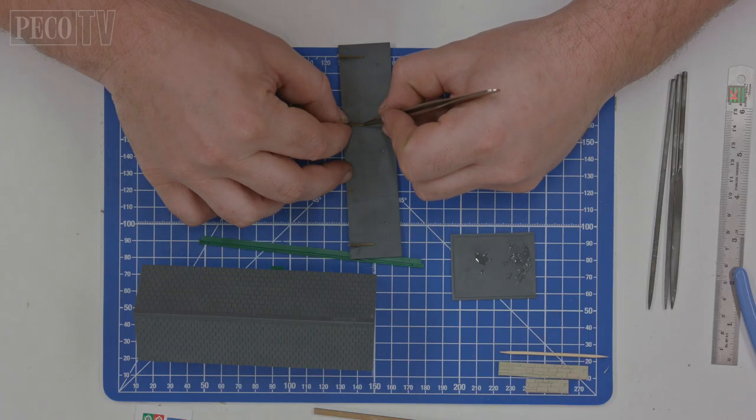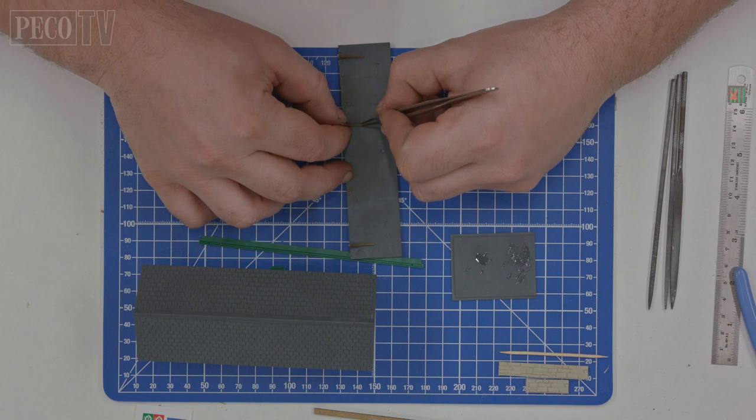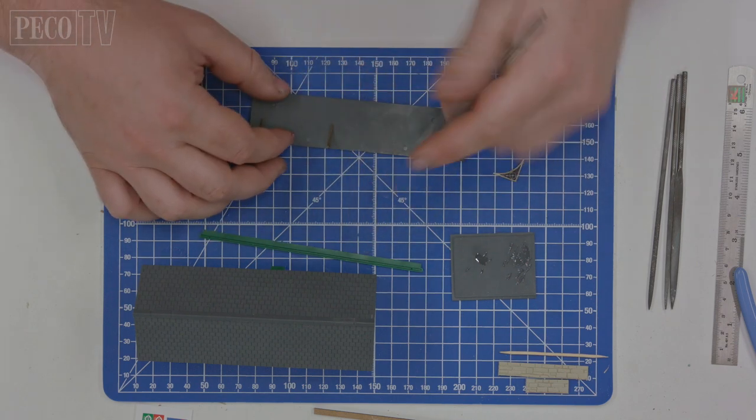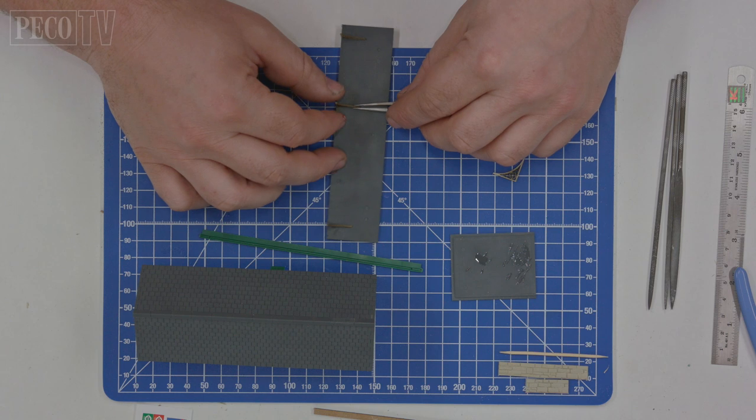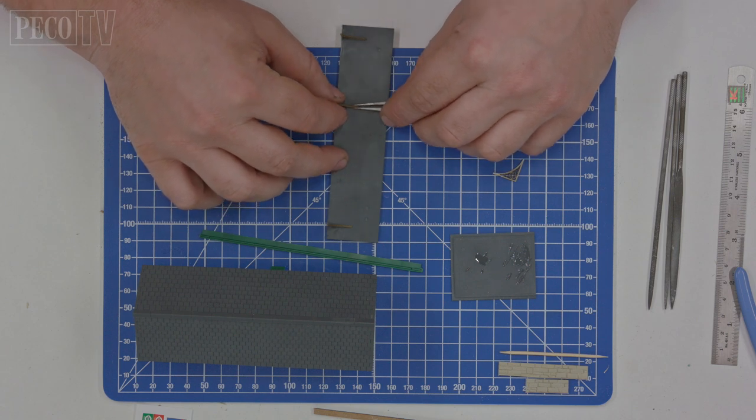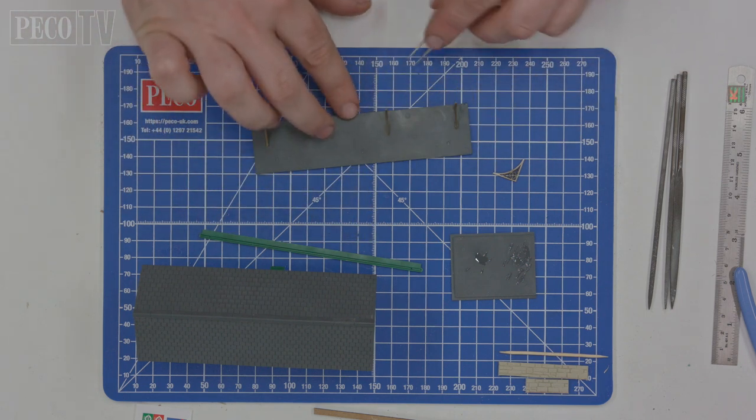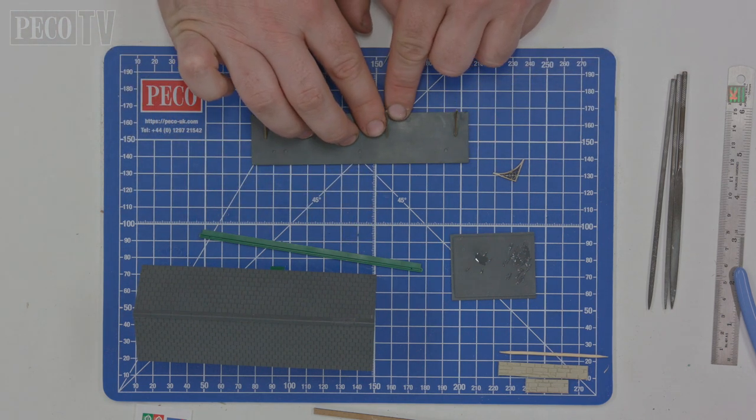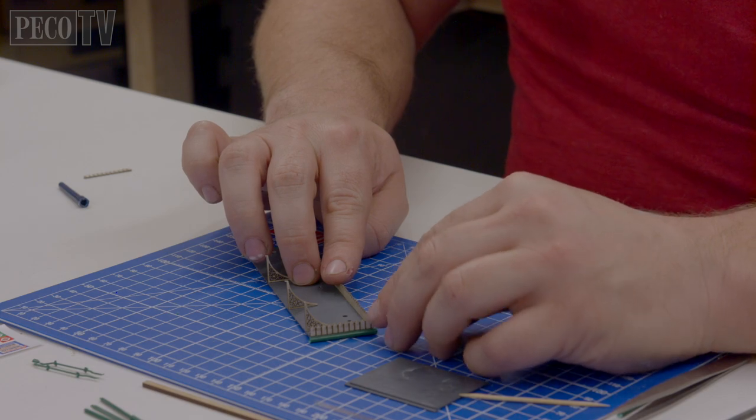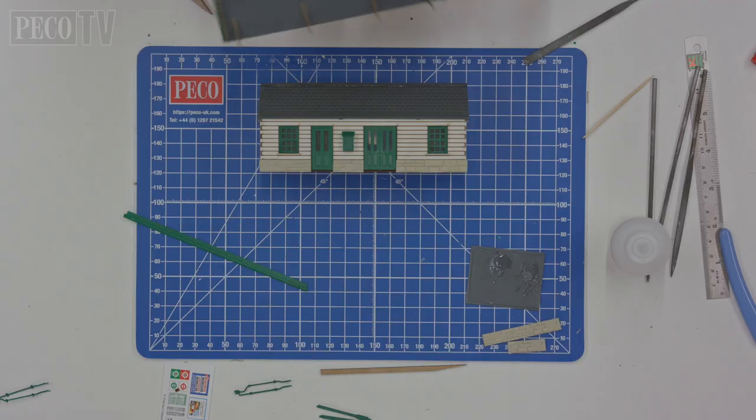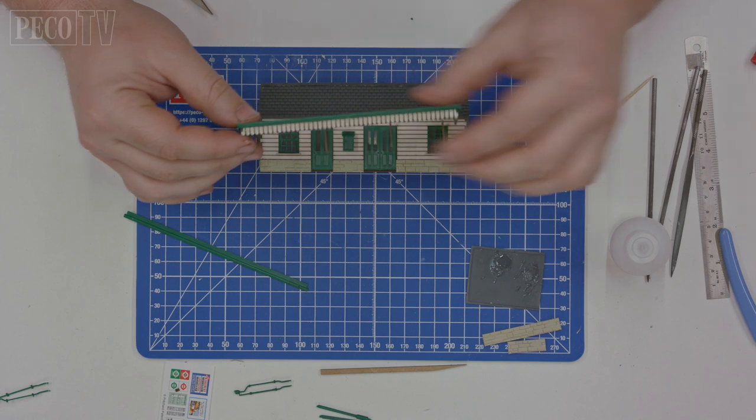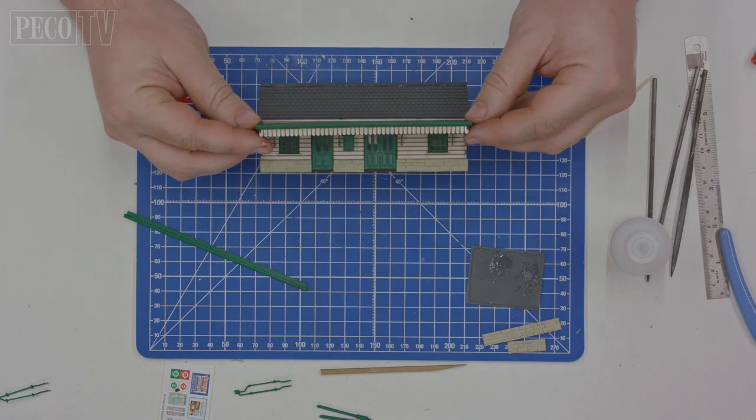Measure and mark out the positions of the four brackets that will hold the platform canopy onto the station building. Make sure they don't obscure the doors and leave room for posters on the walls when super glued in place. Then attach the canopy balancing and super glue the canopy onto the platform side of your station building.